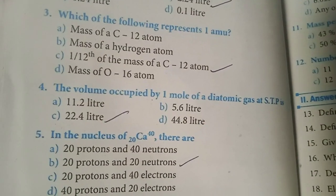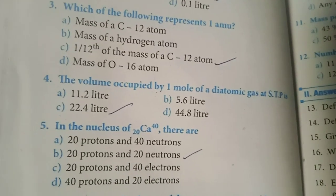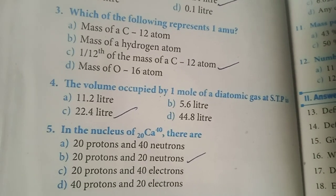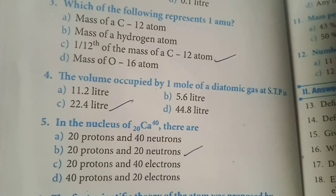In the nucleus of 20 molecules of calcium-40, there are 20 protons and 20 neutrons. Option B is the answer.